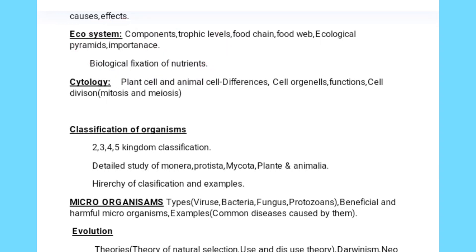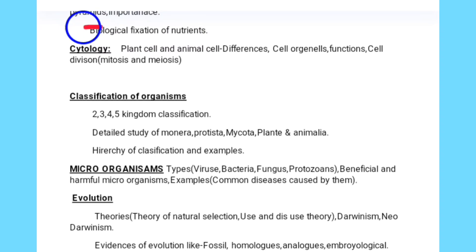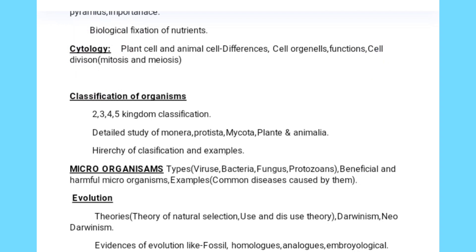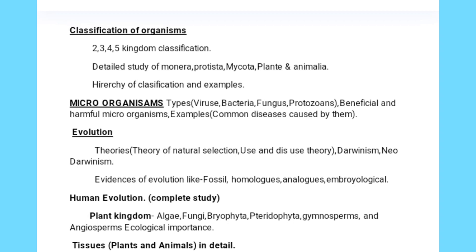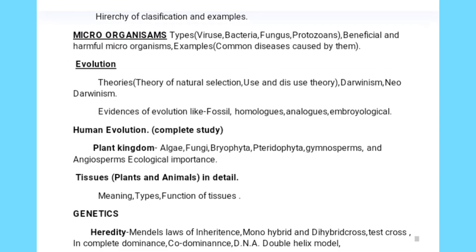Biological nitrogen fixation of nutrients is included. In cytology: plant cell, animal cell, differences between them, cell organelles and their functions are explained — however, cell division was not in the previous GPSTR exam but has now been added. In classification of organisms: 2, 3, 4, and 5 kingdom classifications, with a detailed study of Monera and Protista. Microorganisms — types including virus, bacteria, fungi, and protozoa — their beneficial and harmful uses and common diseases caused by them must be learned.